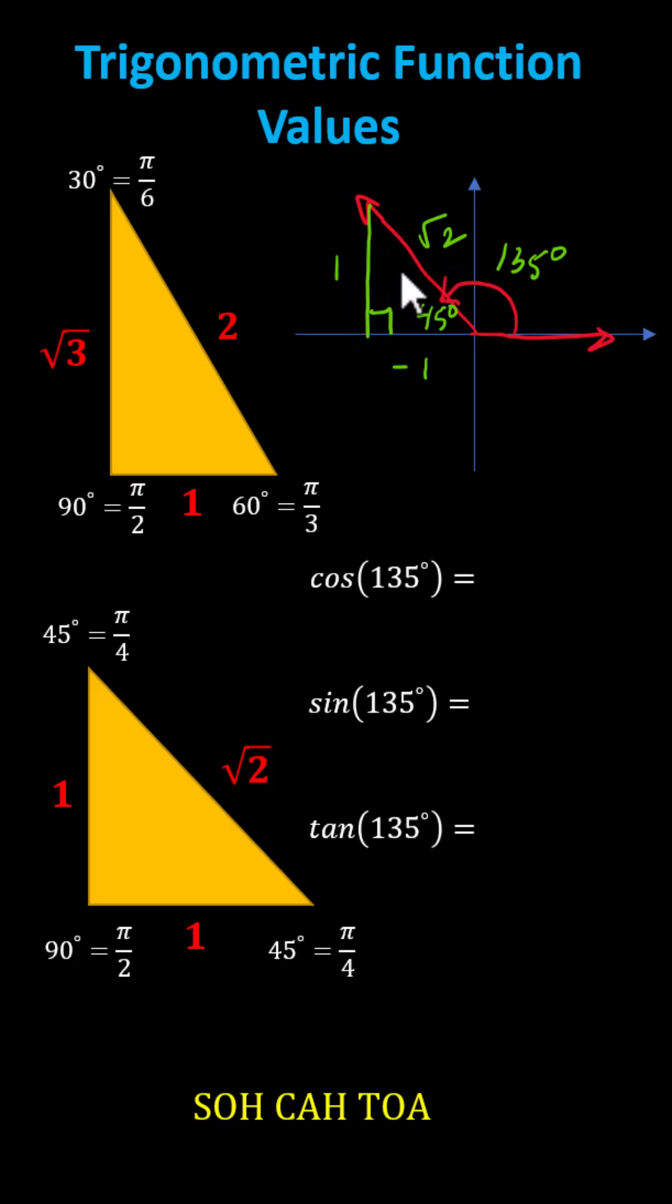And now we use this reference triangle and the reference angle of 45 degrees to determine the three trig function values. Remember we can also use the acronym SOHCAHTOA to help us remember the ratios of the sides of the reference triangle to determine the trig function values.